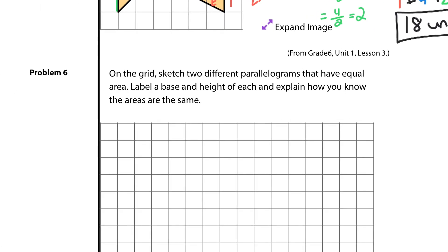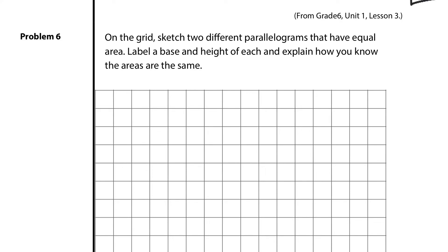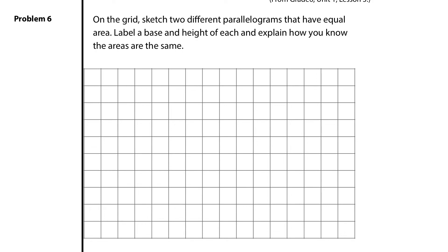Now, in question 6. On the grid, sketch two different parallelograms that have equal area. Label a base and a height for each, and explain how you know the areas are the same. Well, what if I did a 3 by 4 rectangle? Isn't a rectangle a parallelogram? Well, it is. And area for parallelograms are base times height. 4 times 3 is going to get me an area of 12. Now, I called 4 my base and 3 my height.